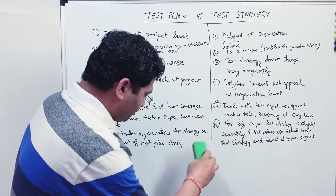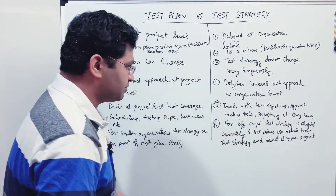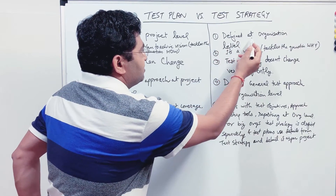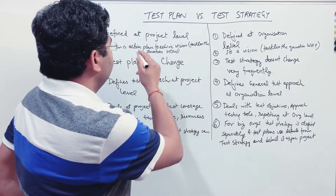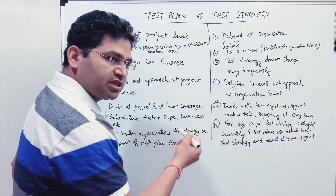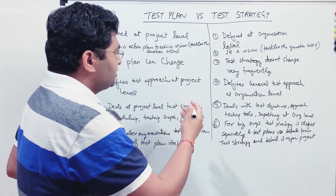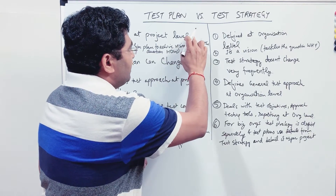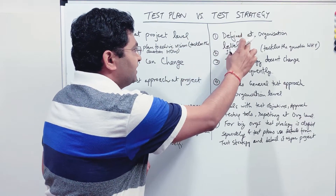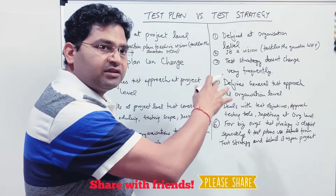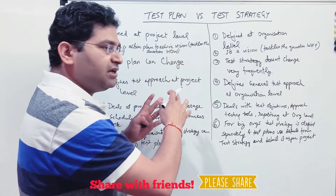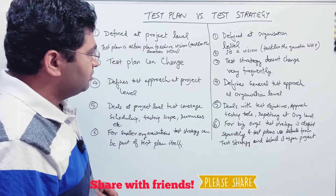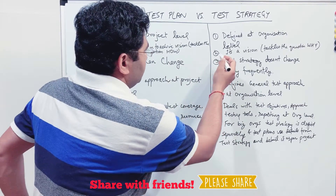Going back to the differences: test strategy is defined at the organization level, while the test plan is defined at the project level and has more project-specific information — but it also incorporates and elaborates the information defined in the test strategy at the org level.